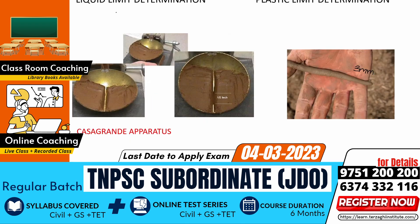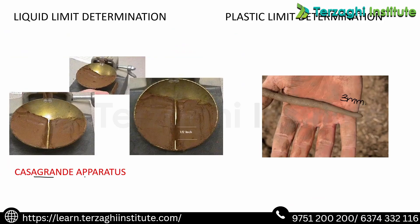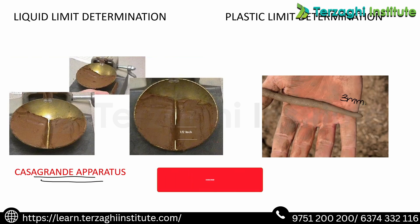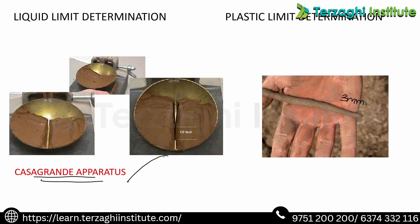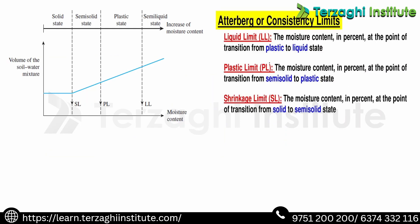Liquid limit determination uses the Casagrande apparatus with 25 taps and groove formation. The detail procedure covers liquid limit, shrinkage limit, and their basic definitions. Plastic to liquid state and semi-solid to plastic state transitions are the key boundaries.